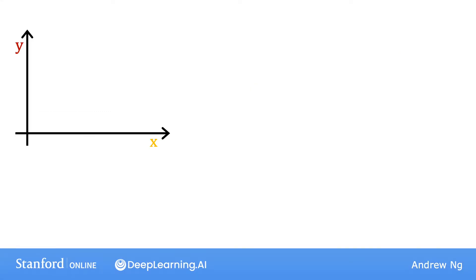Recall that you have a training set like the one shown here. With linear regression, what you want to do is to choose values for the parameters w and b so that the straight line you get from the function f somehow fits the data well. When I say that the line fits the data visually, you can think of this to mean that the line is roughly passing through or somewhat close to the training examples.